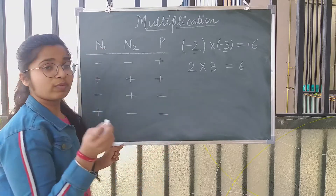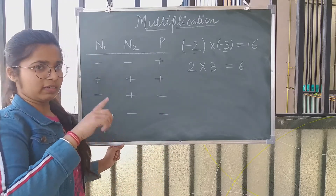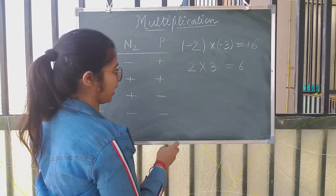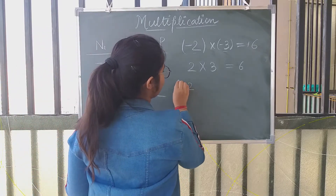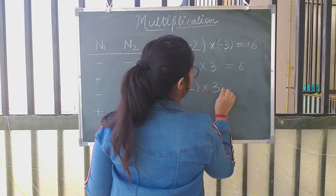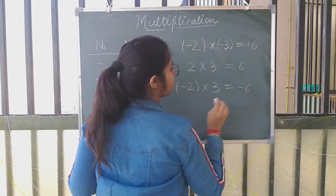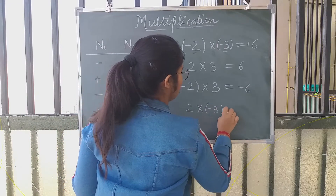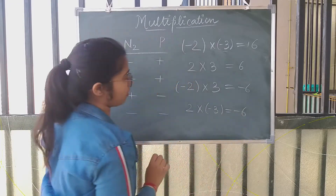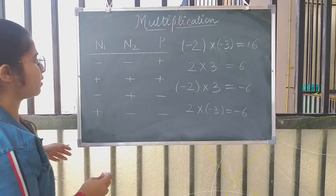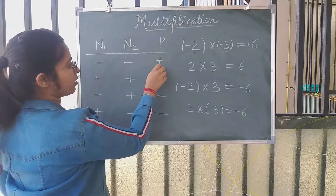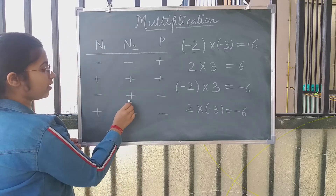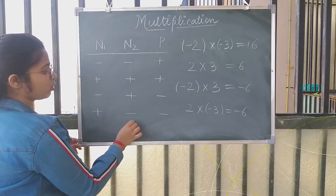If the numbers are of opposite signs — one is minus and one is plus — the answer will always be negative. That means, if I write minus 2 into 3, I will get minus 6. And if I write 2 into minus 3, I will get minus 6. So, minus into minus is plus, plus into plus is plus, minus into plus is minus, and plus into minus is minus.